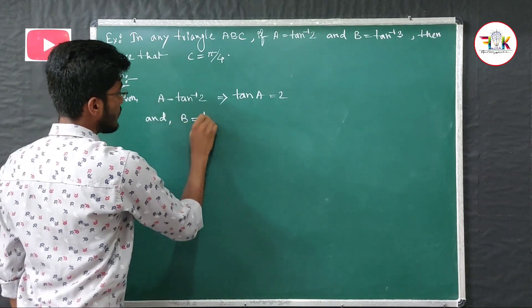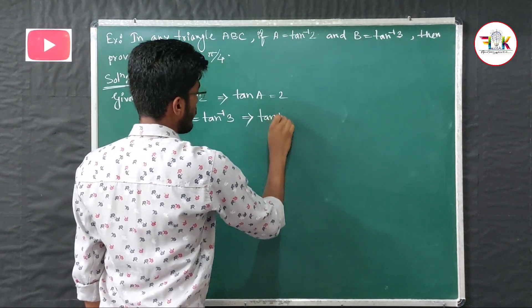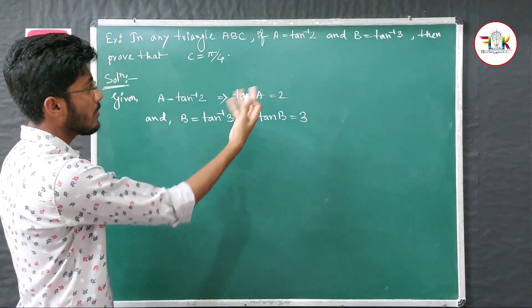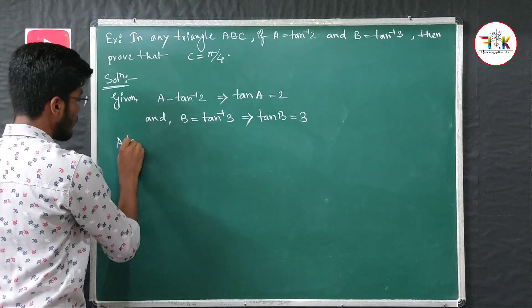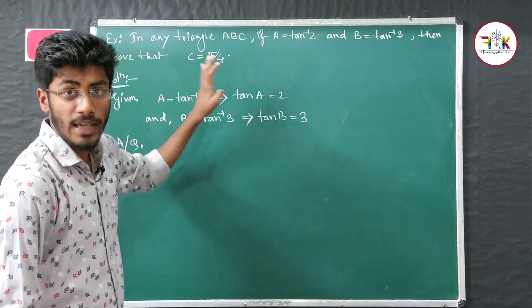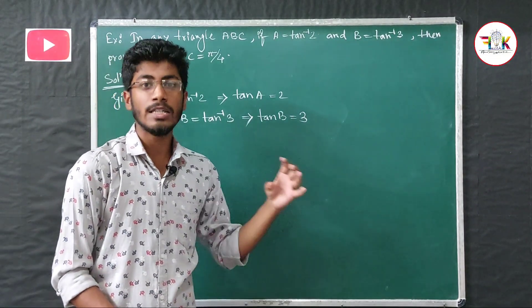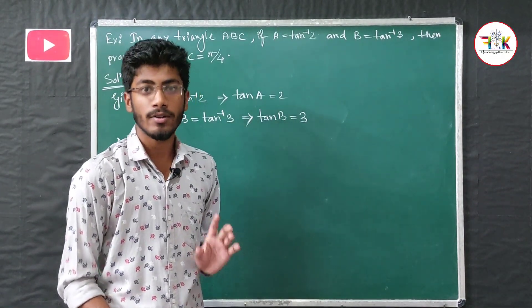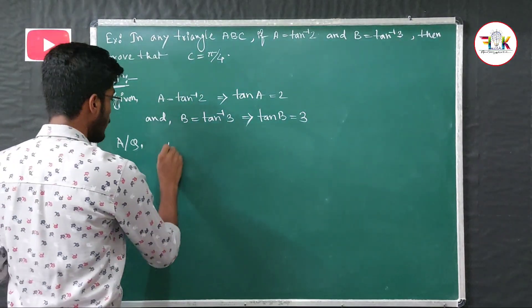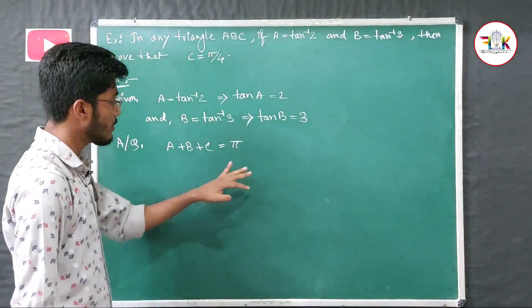We know that in any triangle, A + B + C = π (180 degrees). So A + B = π − C. Taking tan on both sides: tan(A + B) = tan(π − C). Using the formula tan(A + B) = (tan A + tan B)/(1 − tan A · tan B).